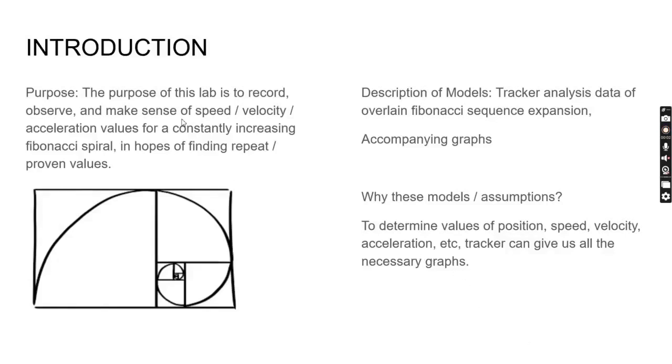Lab 5 purpose: This custom lab is to record, observe, and make sense of different speed, velocity, and acceleration values for an increasing Fibonacci spiral with constant speed, in hopes of finding some constant proven values.